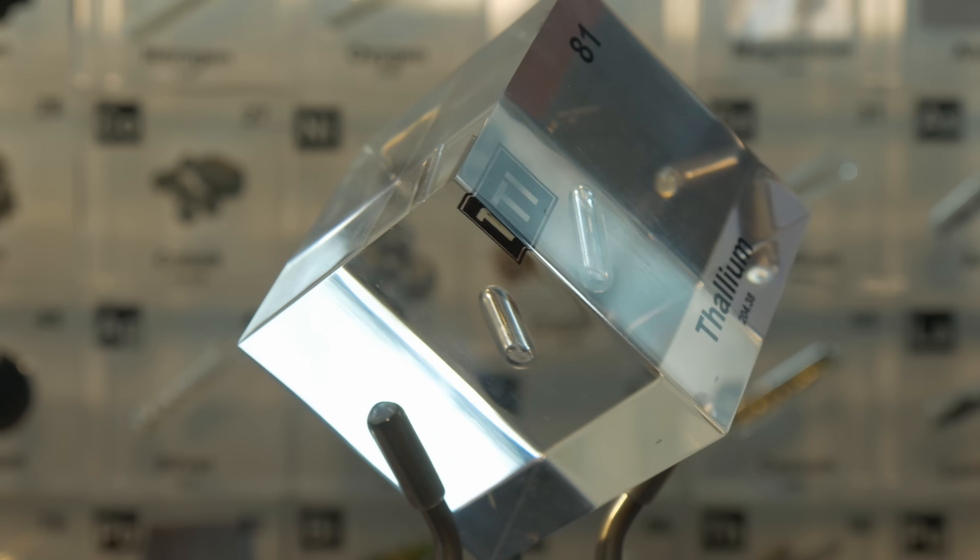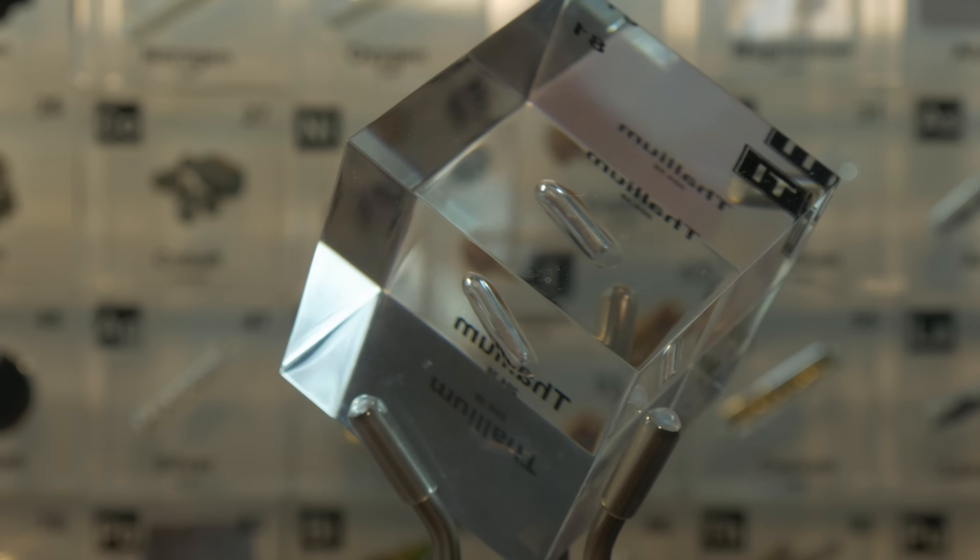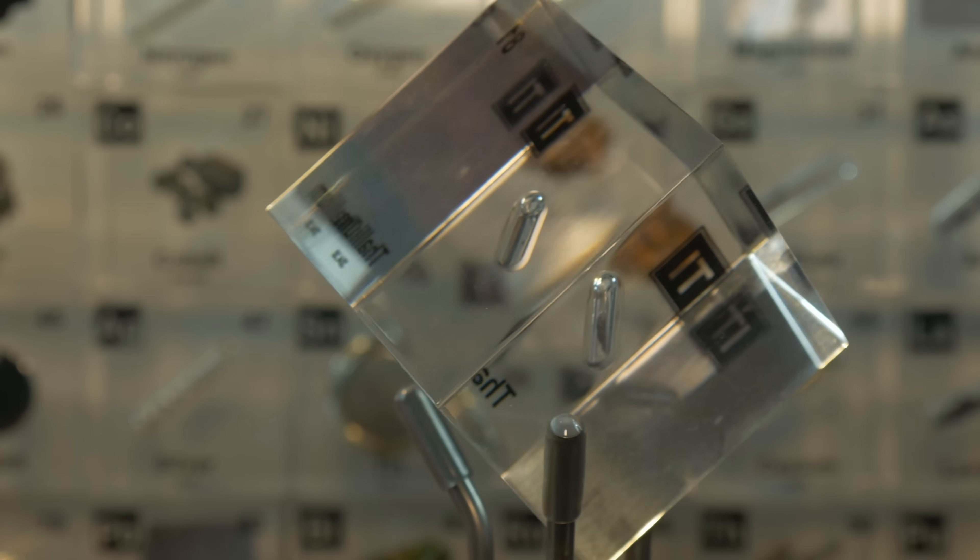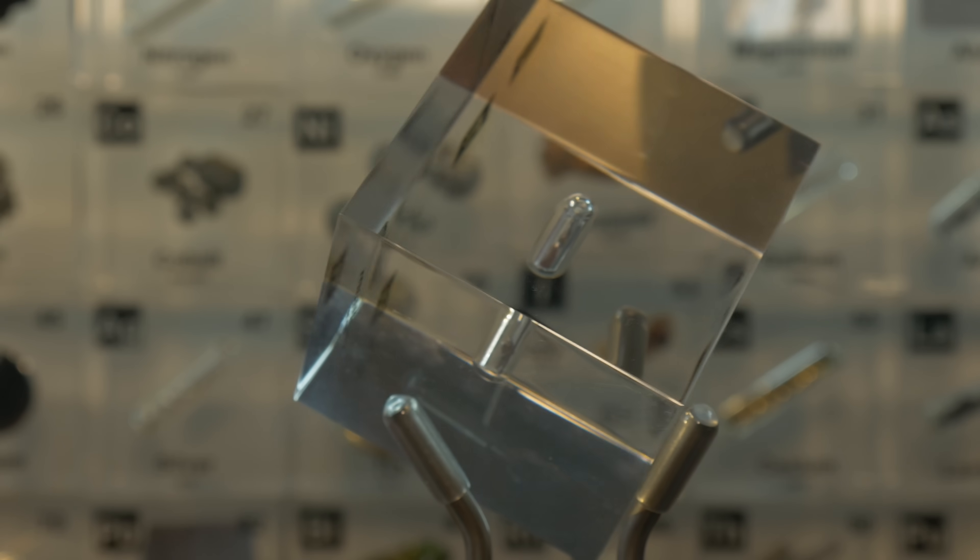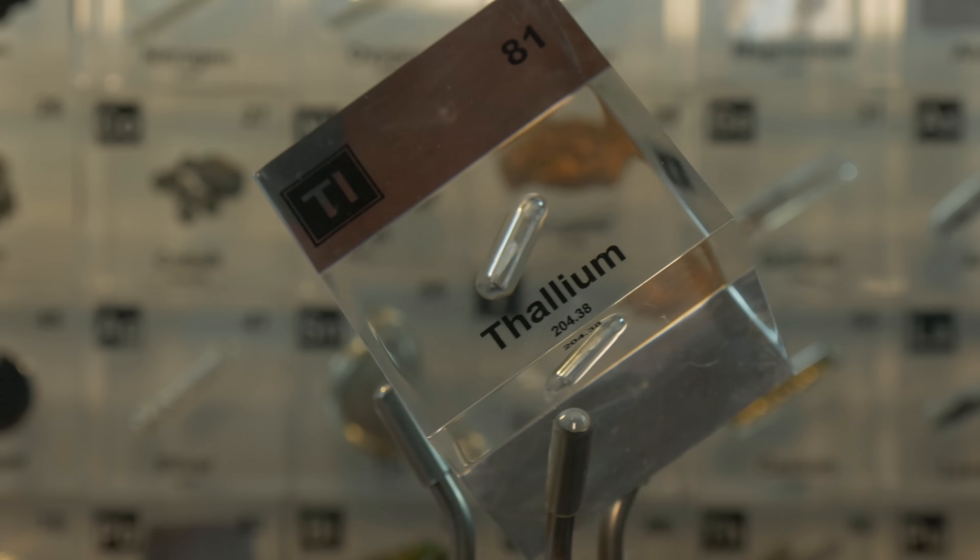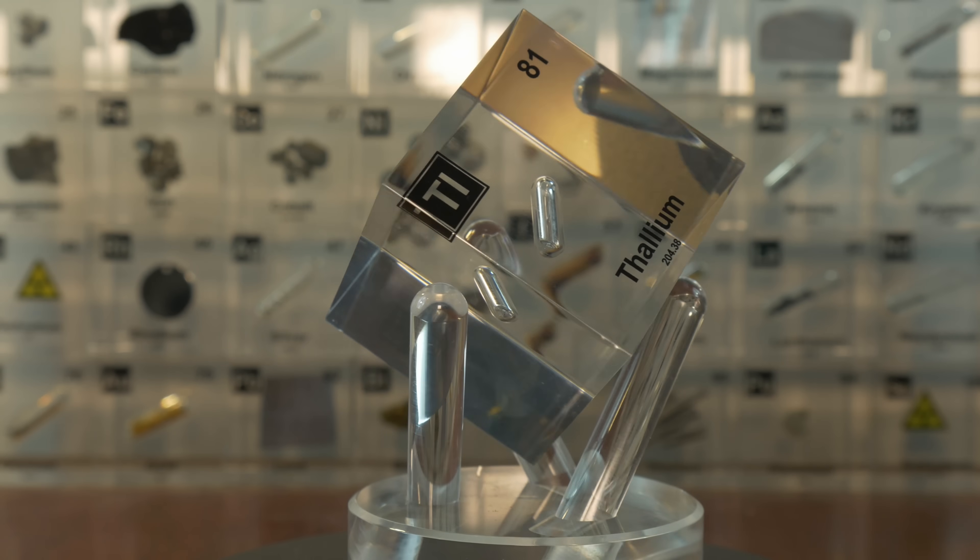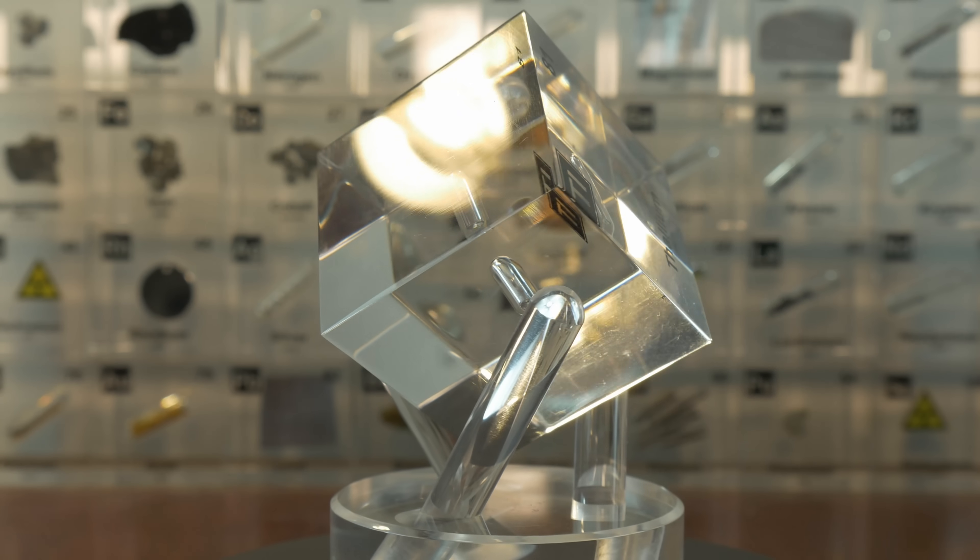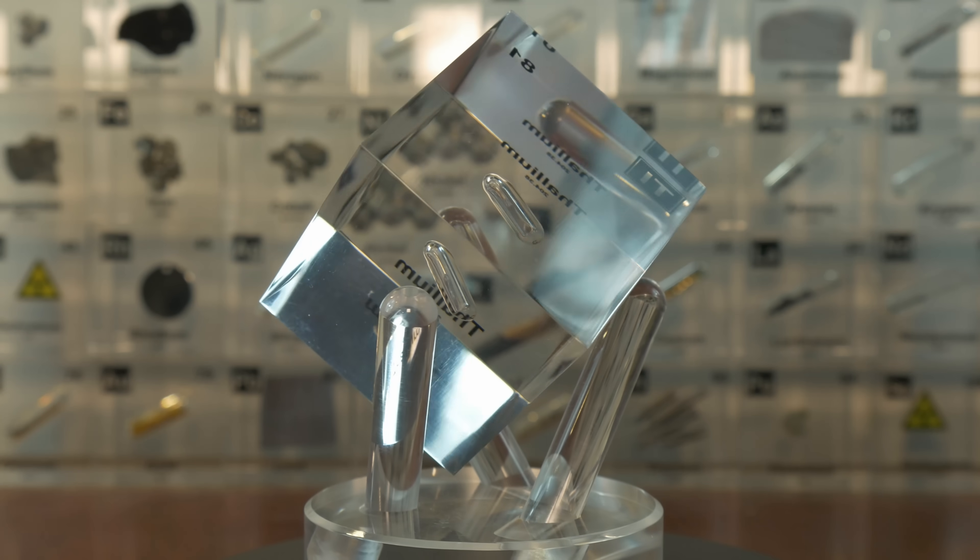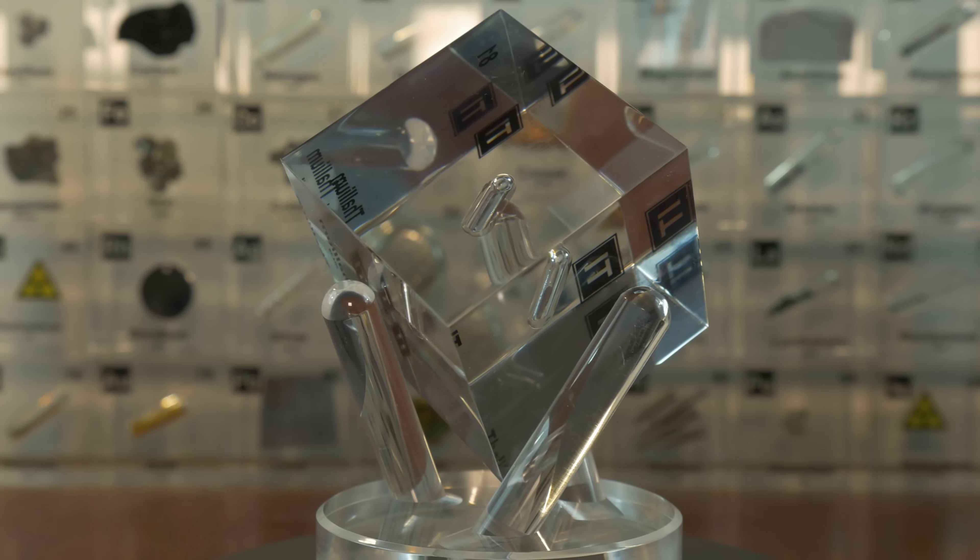Thallium can make really heavy liquids. There is a mixture called Clerici solution, a blend of thallium formate and thallium malonate that is one of the densest water-based solutions ever made. It is so dense that geologists used it in the past to separate minerals by density. Some rocks would literally float in it. Clerici solution can have a density over 4.2 grams per milliliter, more than four times heavier than water. It's a cool party trick for science nerds, except for the minor detail that the solution is highly toxic and corrosive. Understandably, this method isn't commonly used anymore.